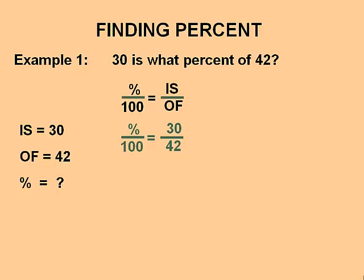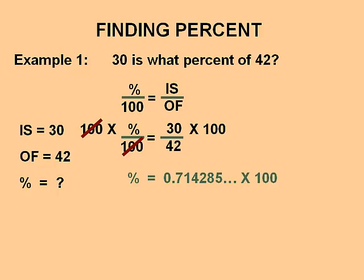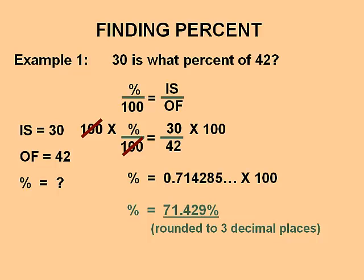Write your estimate on a piece of paper, then we'll calculate and see how close you are. To calculate the percent, we need to isolate it. Right now it is divided by 100, so to get rid of that we multiply both sides by 100. On the left side, 100 divided by 100 gives us 1, leaving just the percent sign. On the right side, 30 divided by 42 gives the decimal 0.714285, and multiplying by 100 gives our answer: rounded to three decimal places, 71.429%.